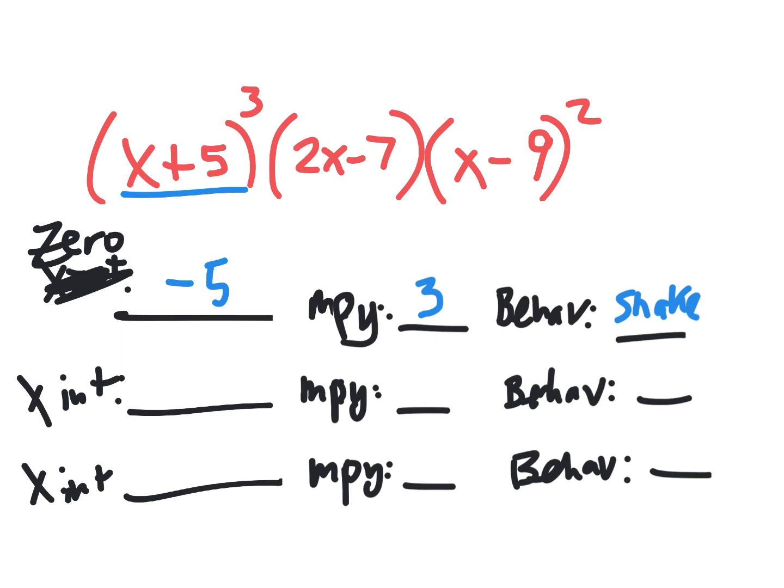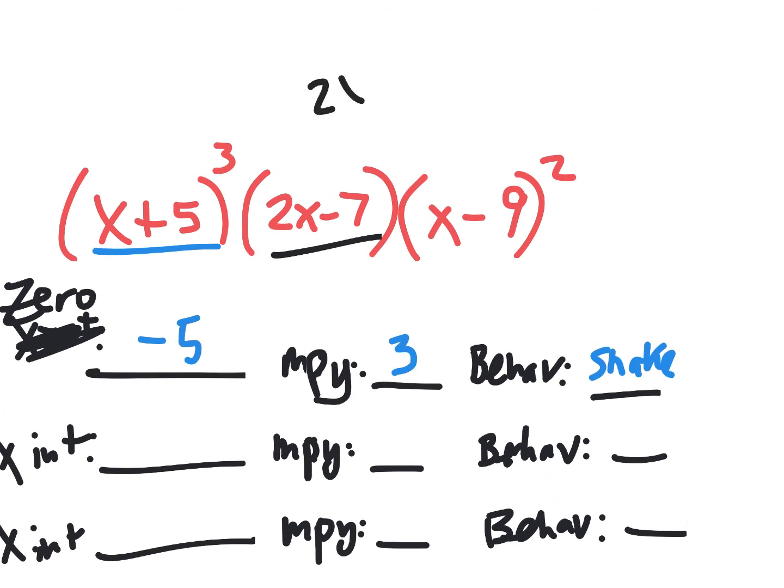And it came from this one. Its multiplicity was three. And its behavior was snake. That's one of your rows. Figure out the other two. I'll pause for a sec. And you give that a try. And then we'll go from there. Seven over two. Yes. This one right here comes out to seven over two. Just for the people at home that don't know how he got that. It's equal to zero. And then two x equals seven. And then x equals seven over two.